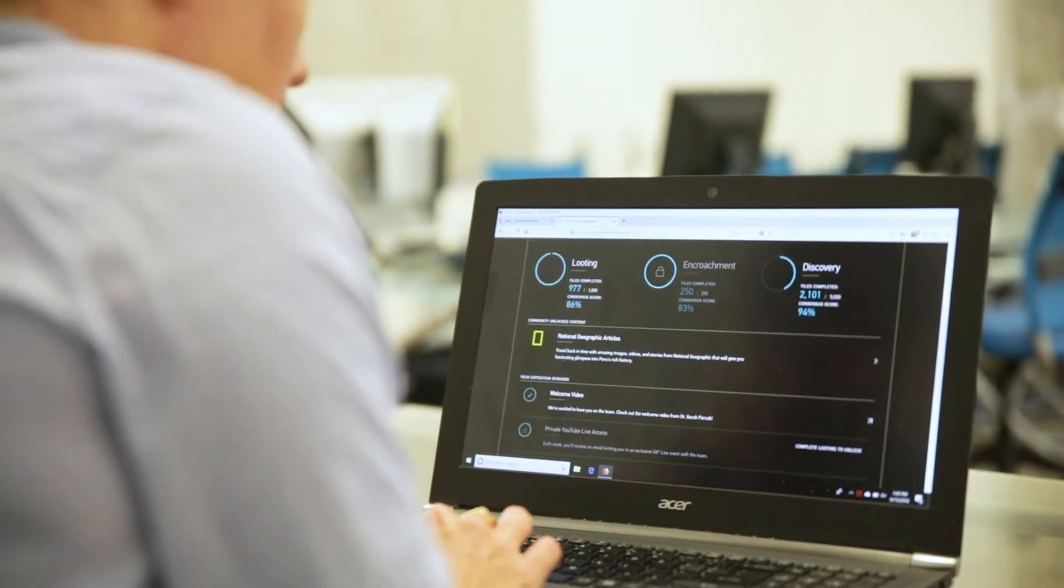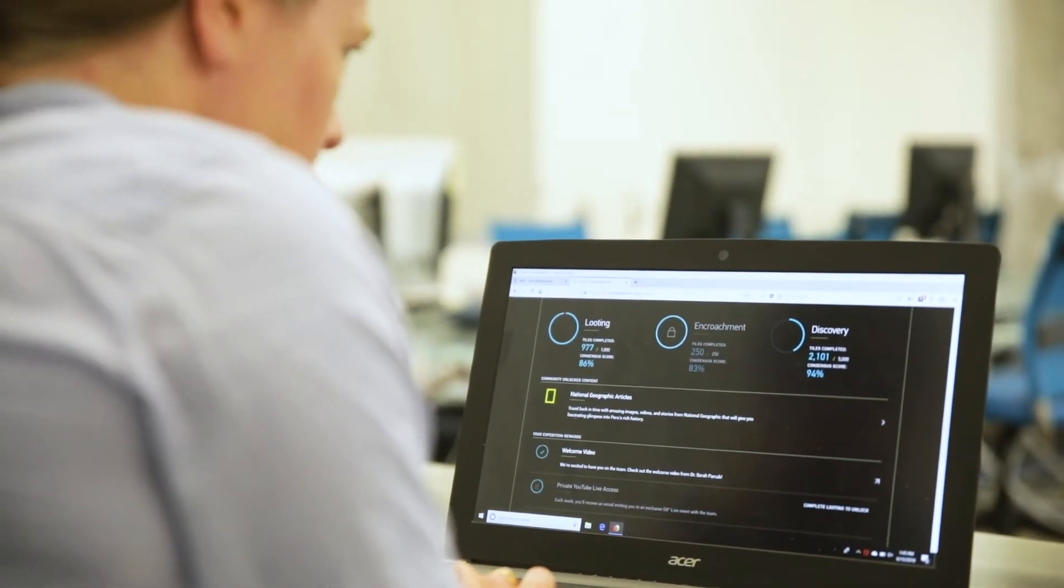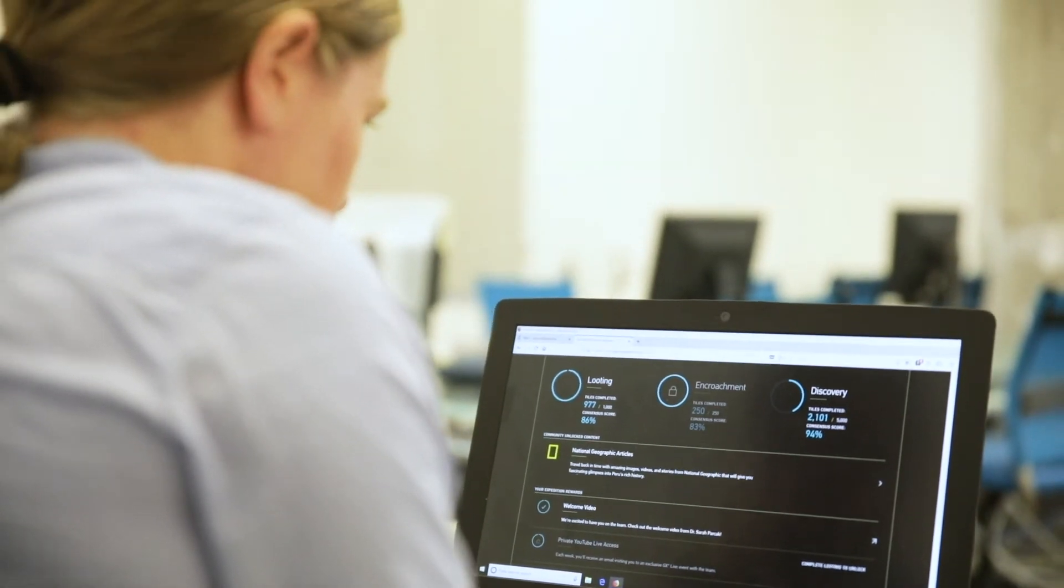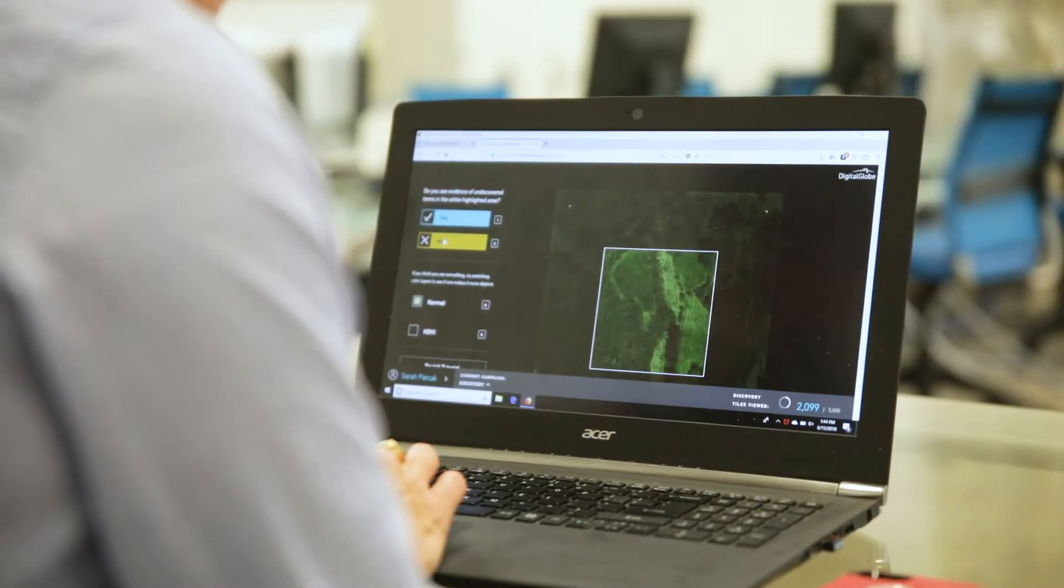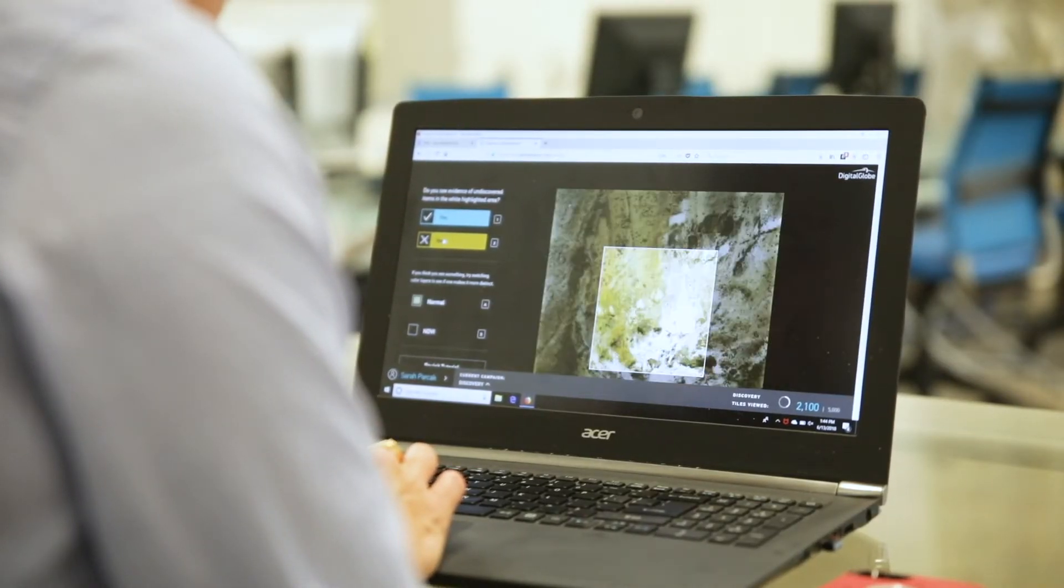We launched our online citizen science crowdsourcing platform in early 2017. To date we've had over 70,000 registered users from over 100 countries and they found almost 30,000 anthropogenic features in Peru and over 700 of them are major archaeological sites.